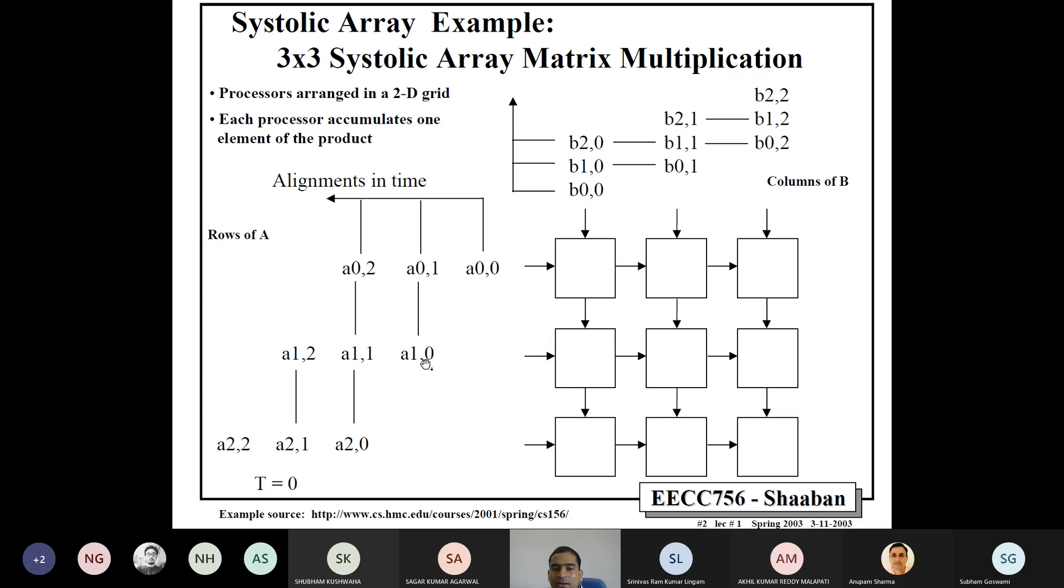And we align them in time like this. So, we have A0,0, A0,1, A0,2, and A1,0, A1,1, A1,2, and so on, A2,0, A2,1, A2,2, and similarly, here, this is the B. So, elements of B will go from top to bottom and elements of A will go from left to right. Processors arranged in 2D grid and this alignment in time, you have to carefully observe, and this is time t equals to 0.